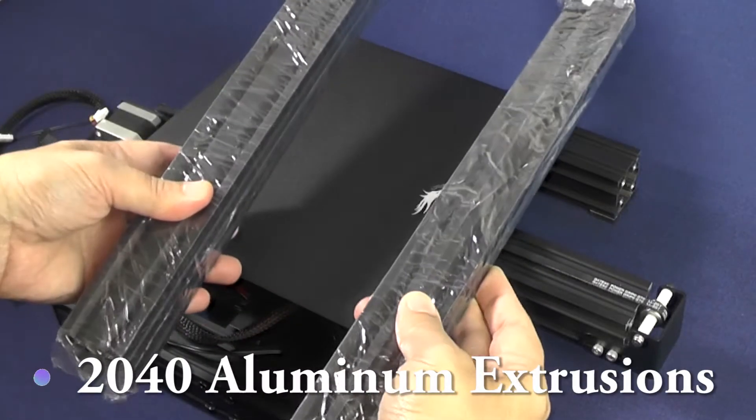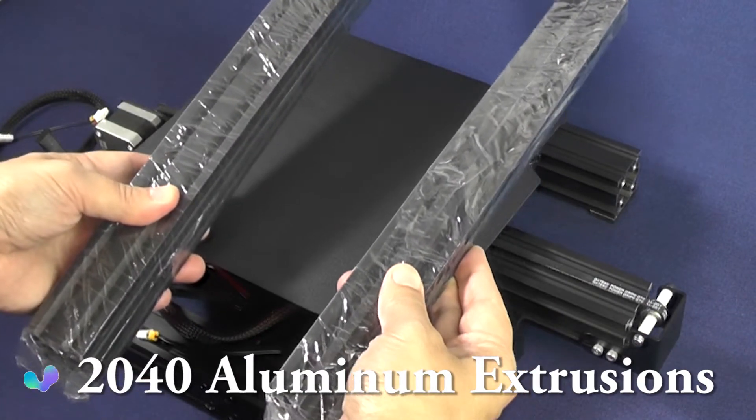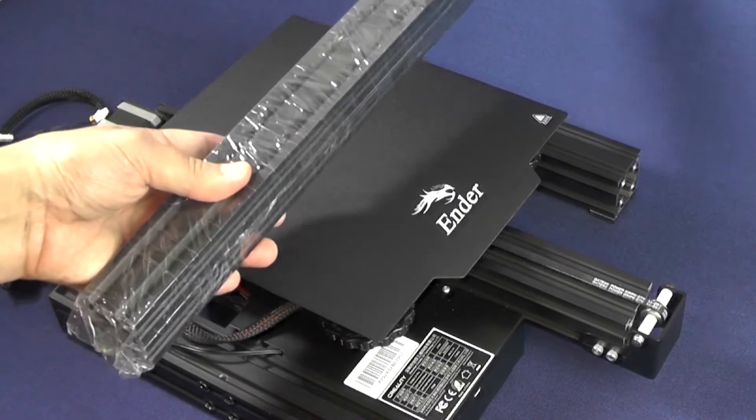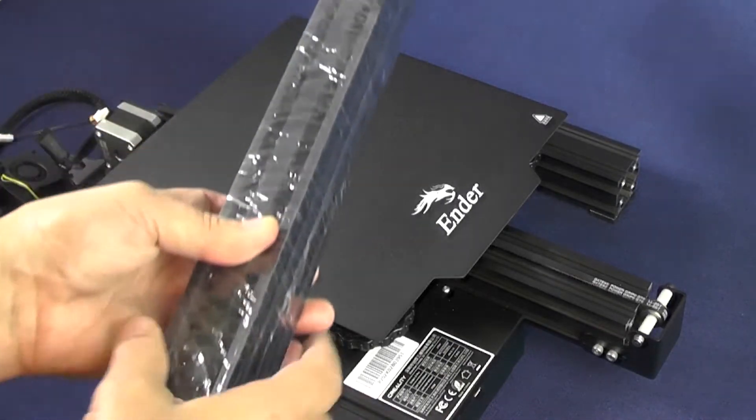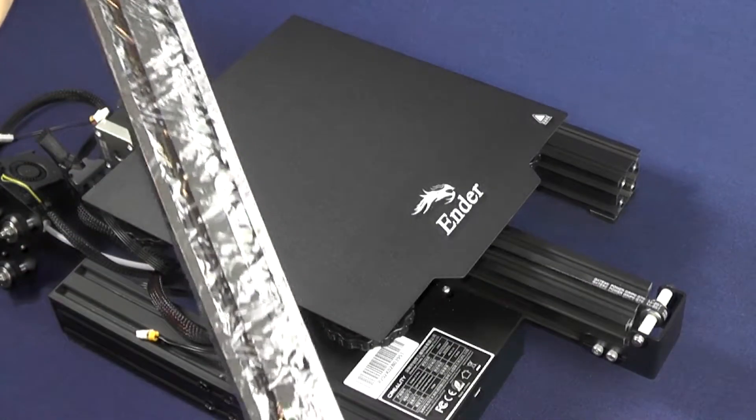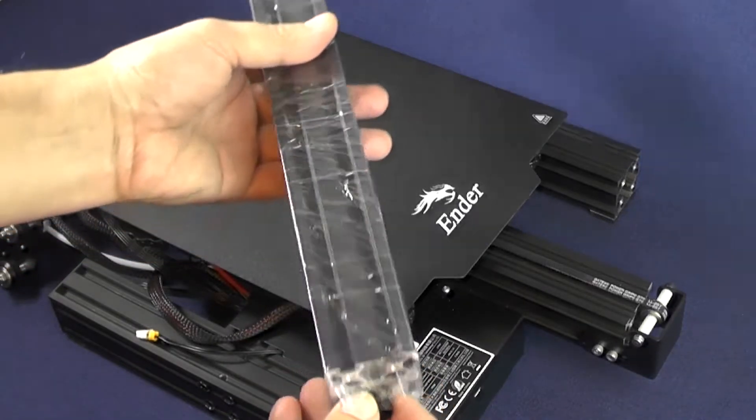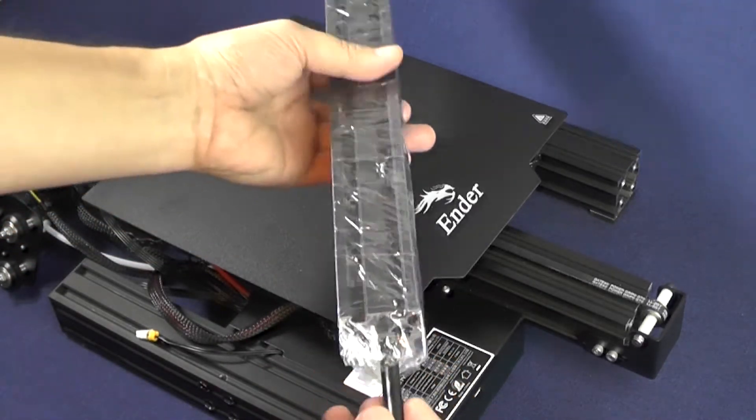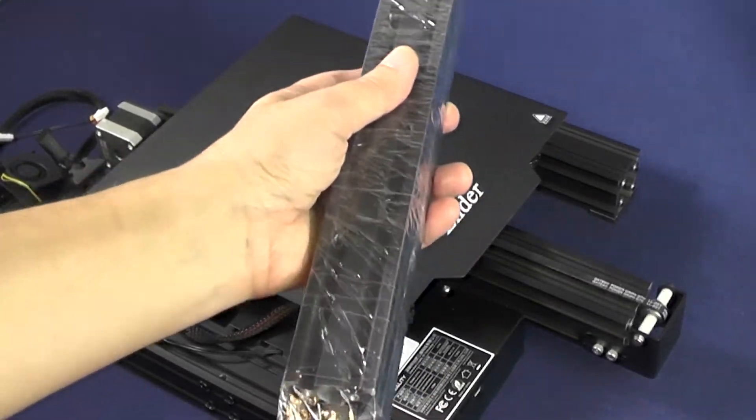Here are the two packages with the 2040 aluminum extrusions. The package that we need is the one with the 2040 aluminum extrusions. You can identify this package because it is the one that has the Z-axis lead screw hidden inside. This thing almost gave me a heart attack doing unboxing. Now remove this lead screw.